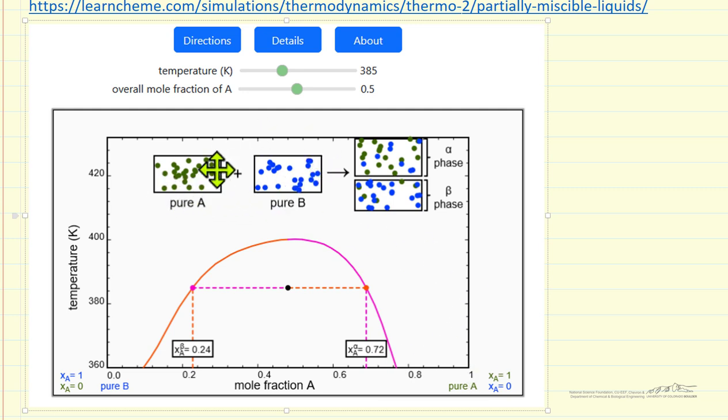The boxes above represent how much of A and how much of B; the sizes are proportional to the amounts.